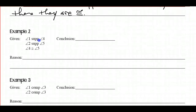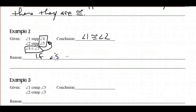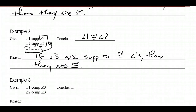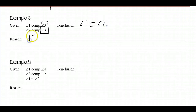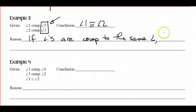Moving on to example 2: angles 4 and 5 are congruent, so I have angles supplementary to congruent angles. Our conclusion would be angle 1 is congruent to angle 2. Theorem: if angles are supplementary to congruent angles, then they are congruent. For example 3: angles 1 and 2 are both complementary to the same angle — angle 3 appears twice, meaning it's the same angle. So angle 1 is congruent to angle 2. Theorem: if angles are complementary to the same angle, then they are congruent.